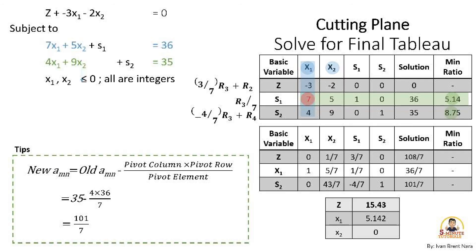For example, let's solve the value in s₂ row by solution column which is 35. Applying the formula and by still having 7 as the pivot element, x₁ as pivot column and s₂ as pivot row.